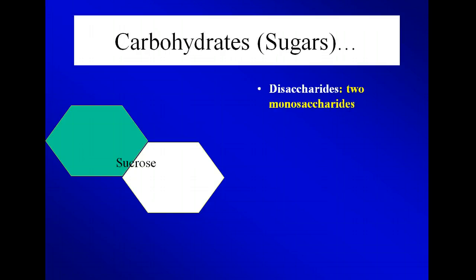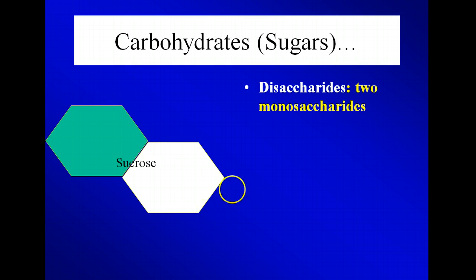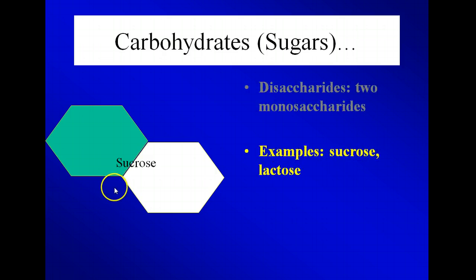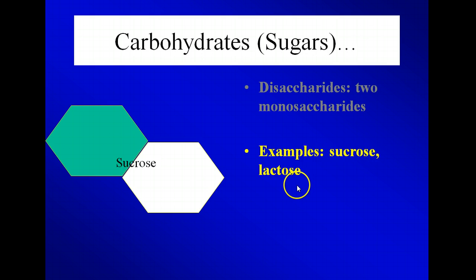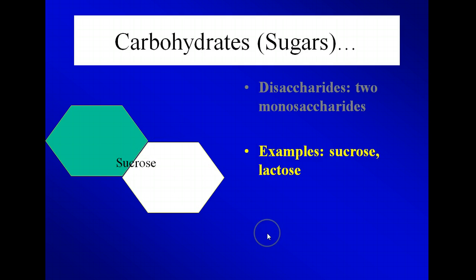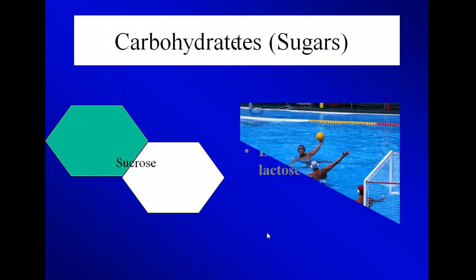A disaccharide — 'di' means two — is when you put two monosaccharides together. Sucrose is an example, as is lactose. Lactose is found in dairy products. When someone is lactose intolerant, it means they can't break this disaccharide down into monosaccharides.